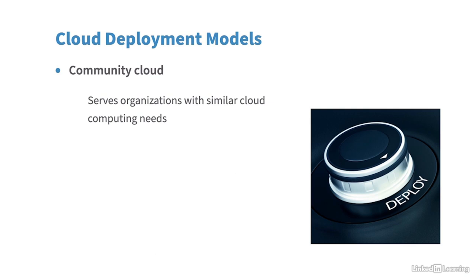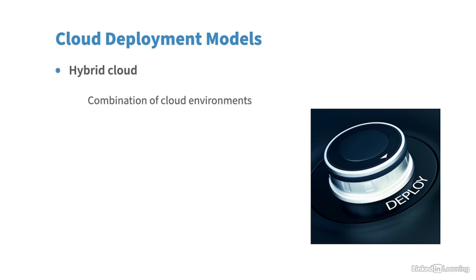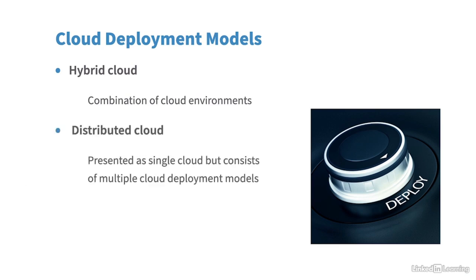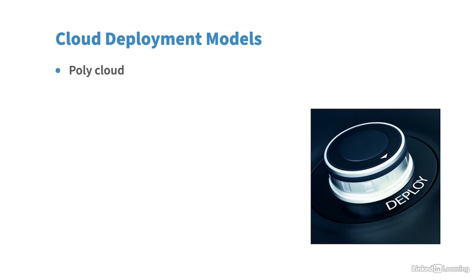Other cloud deployment models include a hybrid cloud, which combines various clouds such as public and private together. A distributed cloud presents itself as a single unified cloud but consists of multiple cloud deployment models. A poly cloud means using multiple cloud providers — perhaps because you prefer the services of one provider in some cases and another provider for a different set of services, or for compatibility reasons with existing legacy apps you want to migrate into the cloud.